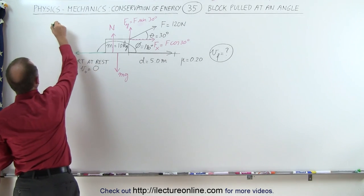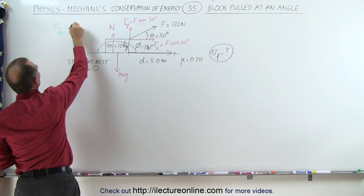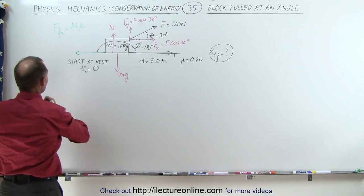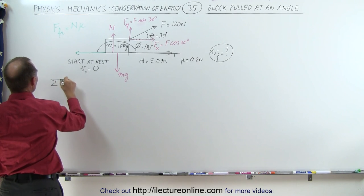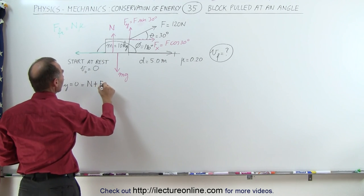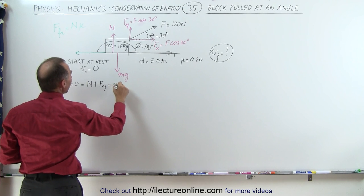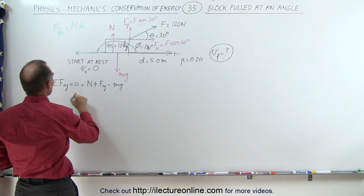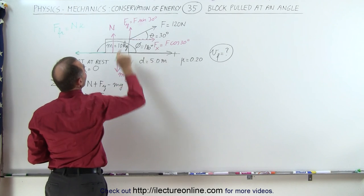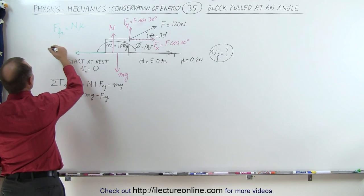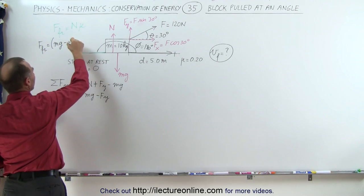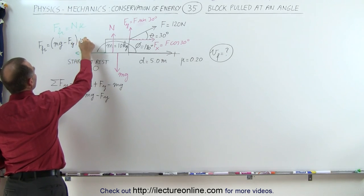Finding the force due to friction — that's going to be equal to the normal force times mu. The sum of all the forces in the y direction must add up to 0, which means the normal force plus the force in the y direction minus the weight mg all adds up to 0. Therefore the normal force equals mg minus the force in the y direction, and the force in the y direction is F times the sine of 30. Plugging that in, the friction force equals mg minus the force in the y direction, multiplied by mu.